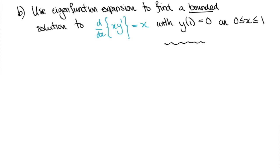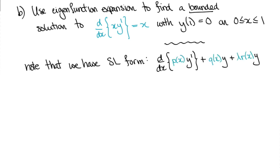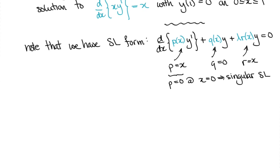The second part of the question asks you to find an eigenfunction expansion for a bounded solution to a related boundary value problem, again with the boundary conditions of y of 1 being 0, and on the domain of 0 and 1. How is this related to the previous part? First, note that in the standard Sturm-Liouville form, the previous problem had p of x being x, q being 0, and r of x being x, and again it's a singular Sturm-Liouville problem due to the fact that p is 0 at x equal to 0.